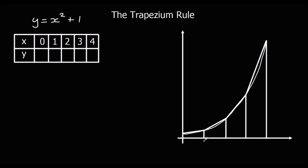We could work out the area of each one separately — that would be longer — but luckily there's a shorter way by simplifying it. Each of the trapeziums is going to have the same width, so I'm going to call that w. I'm going to call this height h1, the second one h2, the third h3, the fourth h4, and the fifth h5.